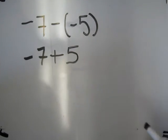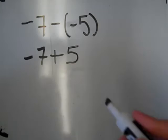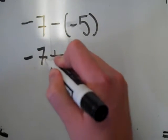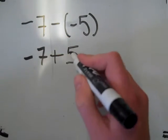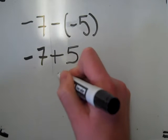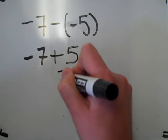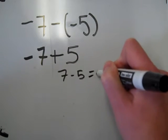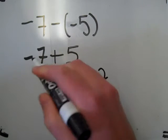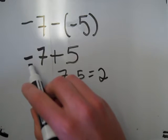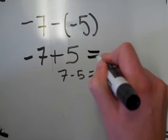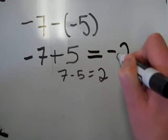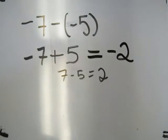Now I have an addition problem which I know how to do: negative 7 plus 5. The signs are different so I subtract. 7 minus 5 equals 2. The sign on the greater absolute value is negative, so the answer is negative 2.